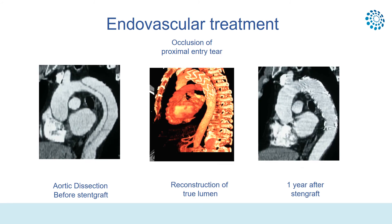Medical treatment with beta-blockers is the most frequent management for uncomplicated descending aorta dissection (Type B). However, in cases with acute complications — particularly signs of impending aortic rupture, peripheral or visceral ischemia, or hemodynamic instability — surgical or endovascular treatment should be indicated. In patients with genetic disorders, endovascular treatment may be considered as a bridge to open surgery.